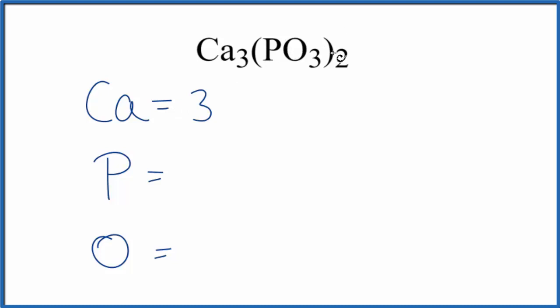For the phosphorus and the oxygen, we need to be a little bit careful because this two here applies to everything inside the parentheses. It's not written, we assume there to be a one after the phosphorus. Two times one, two phosphorus atoms, and then two times three for the oxygen.